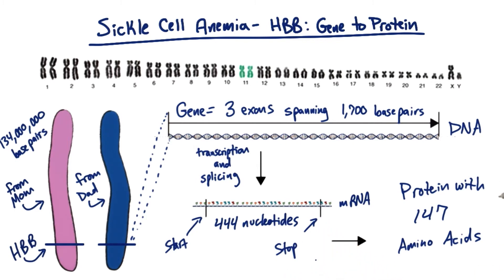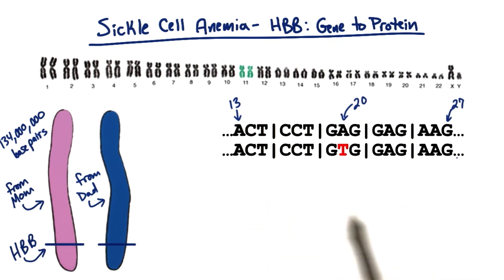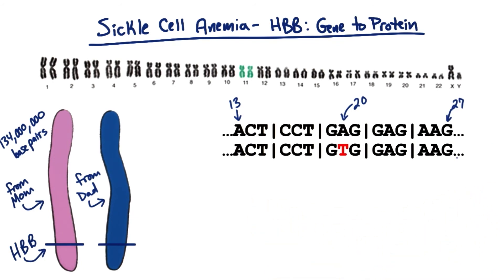As you can imagine, this HBB protein — hemoglobin beta — is pretty important, and so any changes could have a drastic effect on the overall function of the protein. There is one quite famous allele of the HBB gene that ultimately changes the structure of hemoglobin and the red blood cell, thus causing sickle cell anemia.